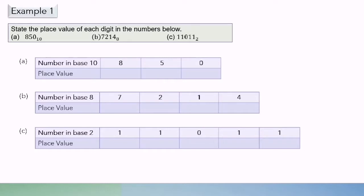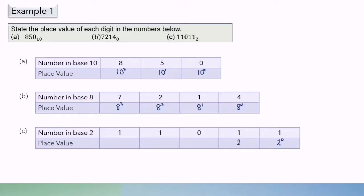Now we look at Example 1: state the place value of each digit in the numbers below. The first number is 850 in base 10. We start with 10 power of 0, 10 power of 1, 10 power of 2. For part B, the place value for a number in base 8, we start with 8 power of 0, 8 power of 1, 8 power of 2, 8 power of 3. For base 2, we start with 2 power of 0, 2 power of 1, 2 power of 2, 2 power of 3, 2 power of 4.